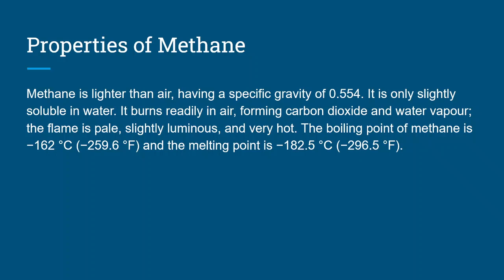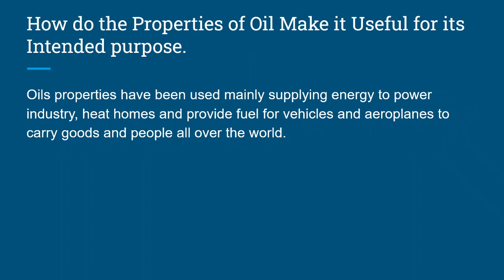The boiling point of methane is negative 259.6 degrees Fahrenheit, and the melting point is negative 182.5 degrees Celsius. How do the properties of oil make it useful for its intended purpose? Oil's properties have been used mainly as supplying energy to power industry, heat homes, and provide fuel for vehicles and airplanes to carry goods and people all over the world.